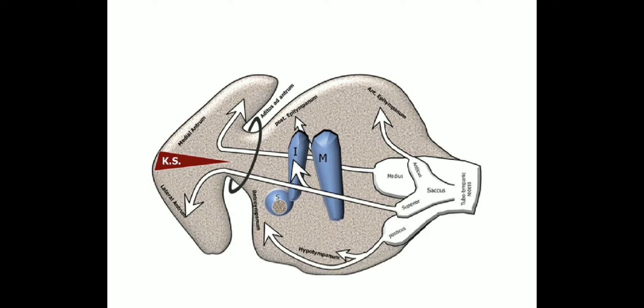The terminal end of the tubo-tympanic recess divides into four saccules: saccus anticus, saccus medius, saccus superior, and saccus posticus. These saccules expand progressively to replace the middle ear and mastoid mesenchyme. The walls of the expanding saccules envelop the ossicular chain and line the walls of the middle ear cavity, and the interface between the two saccules gives rise to several mesentery-like mucosal folds which transmit blood vessels and ligaments to the middle ear contents.